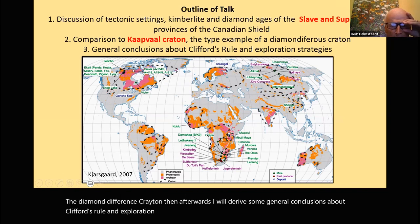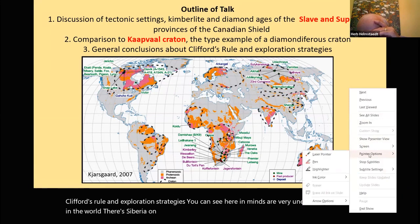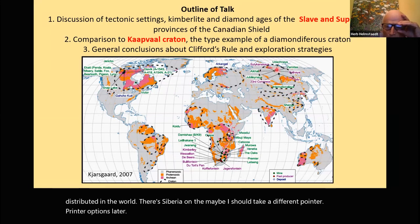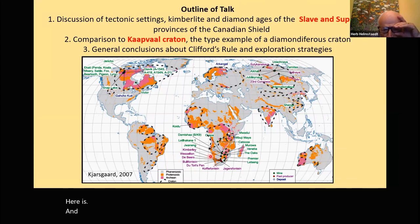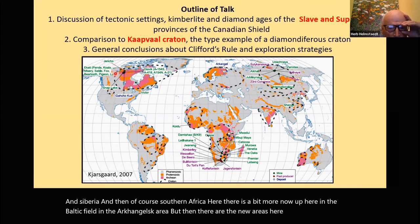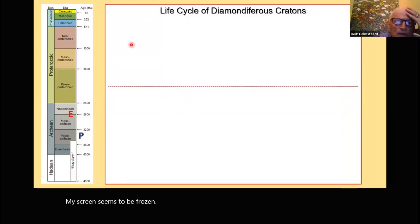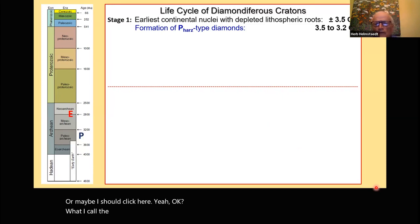Diamond mines are very unevenly distributed in the world. There's Siberia, then of course Southern Africa, a bit more in the Baltic Shield in the Arkhangelsk area, and then the new areas in Canada — the Slave Province and the Superior Province, where we now have two diamond mines. Most cratons can be described in what I refer to as the life cycle of diamond-bearing cratons.